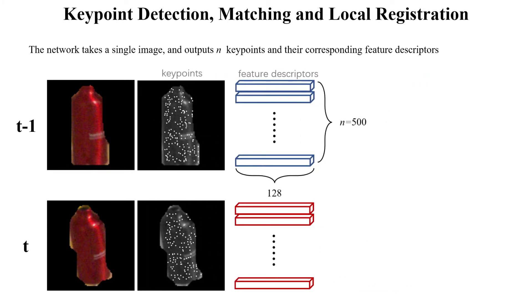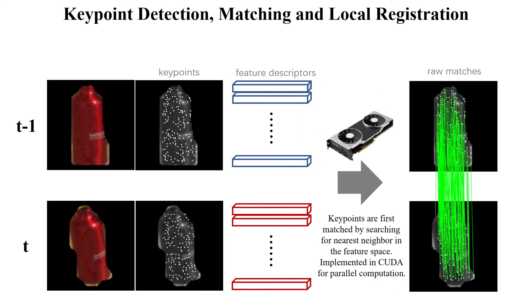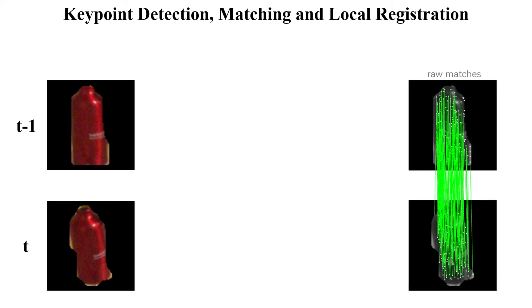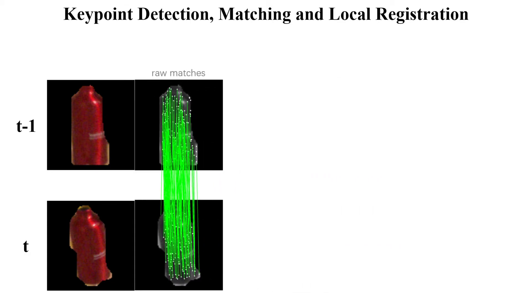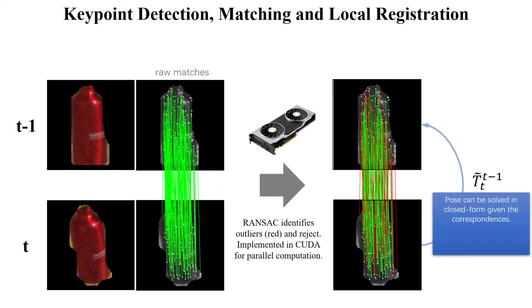Keypoints are first matched by searching for nearest neighbors in the feature space implemented in CUDA for parallel computation. RANSAC identifies and rejects outliers as shown in red. Then the 6D pose can be solved in closed form given the correspondences and will be used for initializing the pose graph for later refinement.